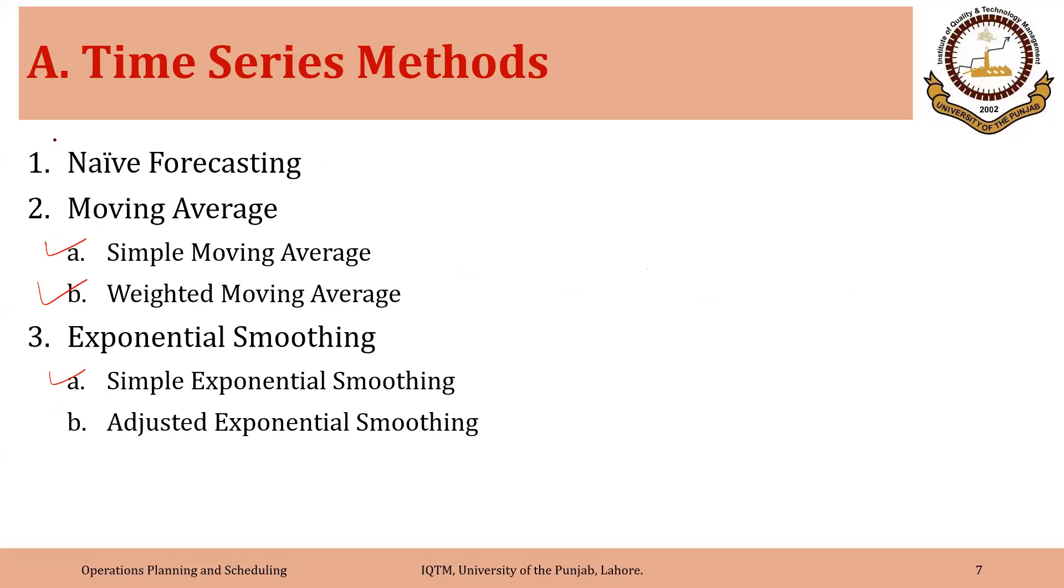Generally these methods, the moving average methods and the first of the exponential smoothing focus on catering for the random variations in demand. Generally in their pure form they do not address the seasonality or trend. From here onward using adjusted exponential smoothing and the rest of the methods that we will see, these methods address trend, seasonality or some methods also address the combination of the two.